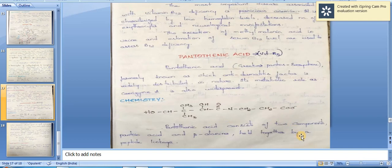Chemistry: pantothenic acid consists of two components—pantoic acid and beta-alanine—held together by a peptide linkage.